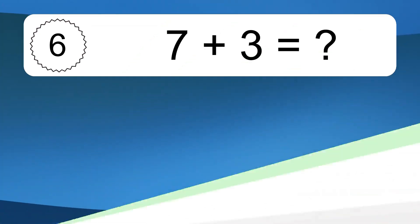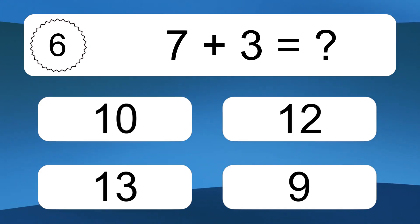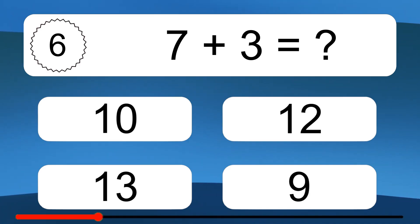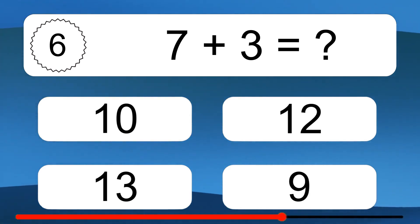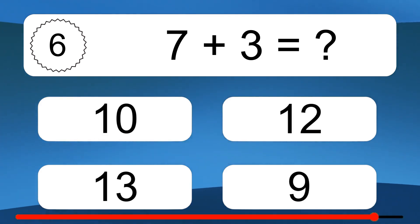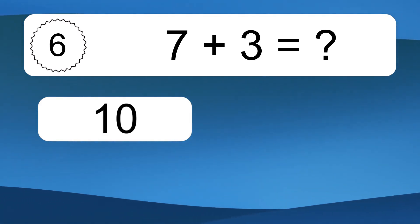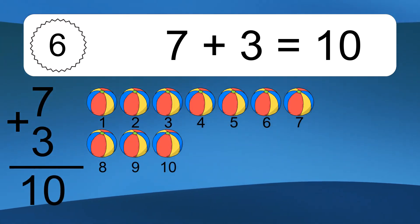7 plus 3 equals what? 7 plus 3 equals 10.